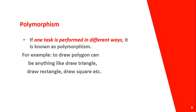Polymorphism — basically, polymorphism means one thing can take many forms. For example, a polygon draw method can draw a triangle, rectangle, and square. So basically, that is polymorphism.